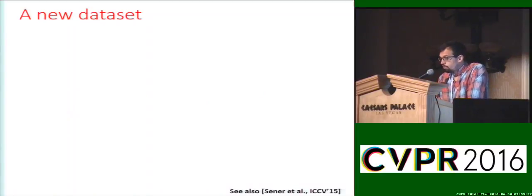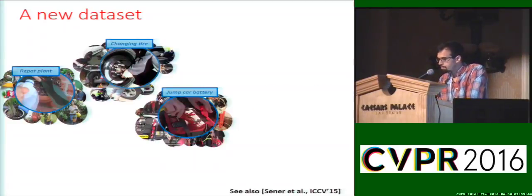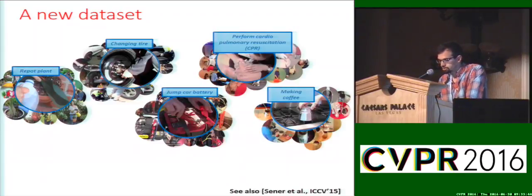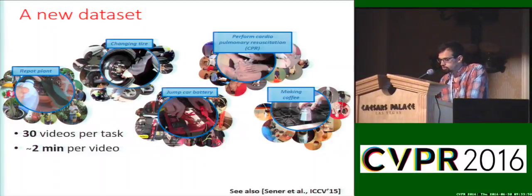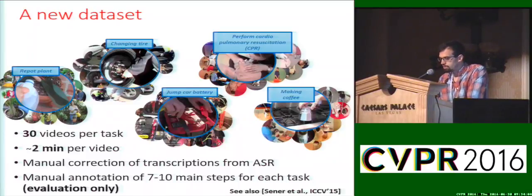Instruction videos are a relatively new area with a lack of annotated data. For this reason, we decided to create a new dataset of instruction videos depicting different tasks: repotting a plant, changing a tire, jump-starting a car battery, making coffee, and performing cardiopulmonary resuscitation. We have 30 videos per task, each video about 2 minutes long, resulting in a total of more than 800,000 frames. Each video is accompanied with a transcript manually corrected from the automatic speech recognition of YouTube. For each task, we have defined a list of 7 main steps and annotated their location inside the videos. Those annotations are only used to evaluate our method, as we don't use any labels at training time.